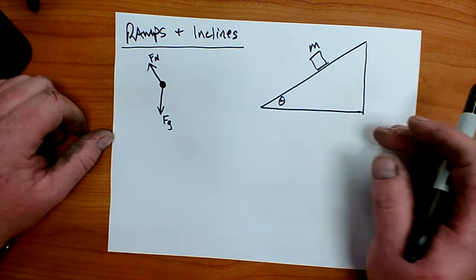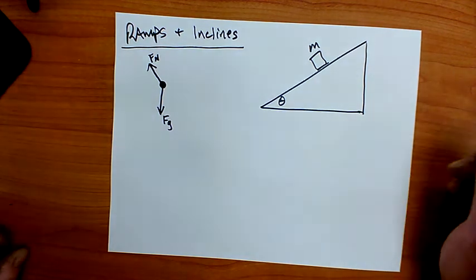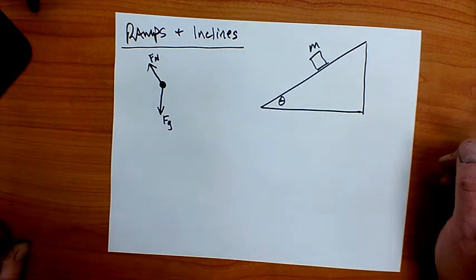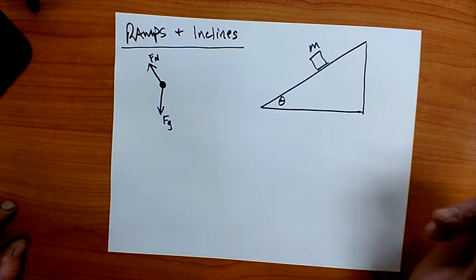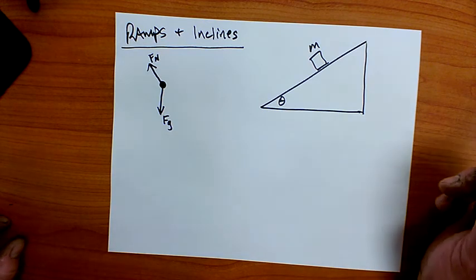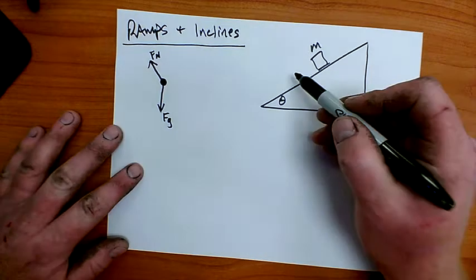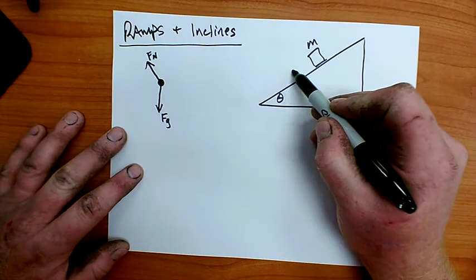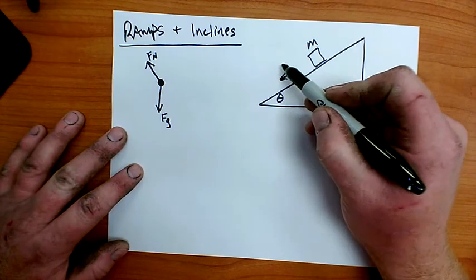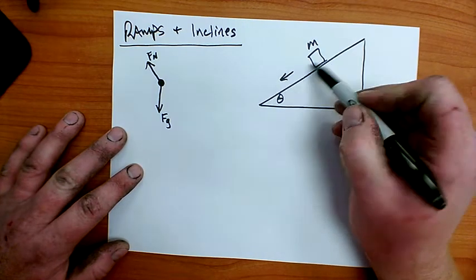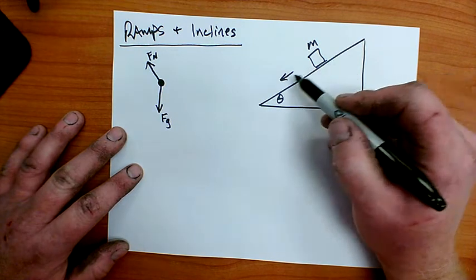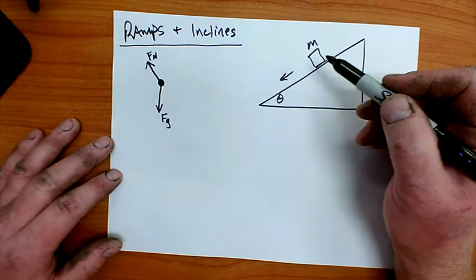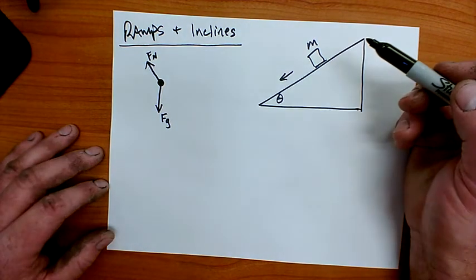Step two is to write the basic equation: net force equals mass times acceleration. But there's one extra thing — I want to ask myself what is the direction that it would accelerate. In this case it's going to accelerate along the surface of the ramp, parallel to the surface and downhill.